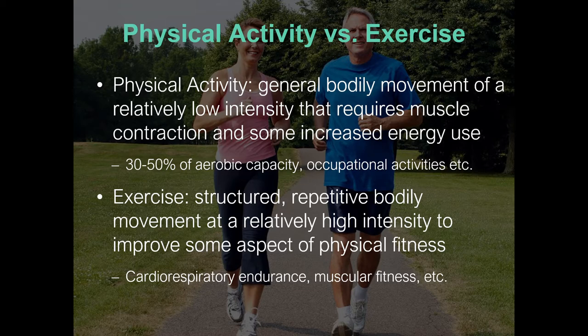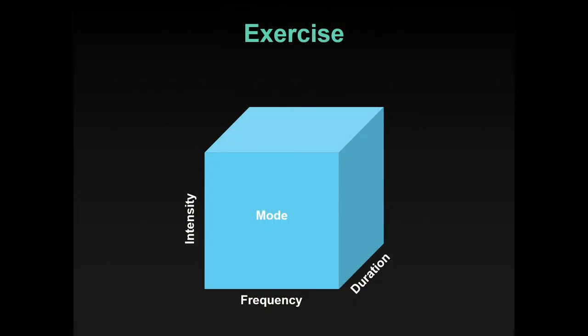Visually, you can think of exercise as a structured cube with defined dimensions: intensity, frequency, duration, and mode. You can see all the edges and know the volume of exercise being done. Physical activity, by contrast, might be a section of that cube with indeterminate frequency or duration, varying intensity — it's unplanned.